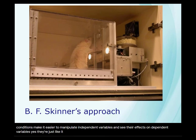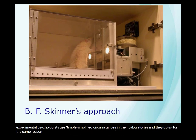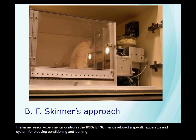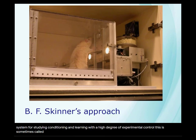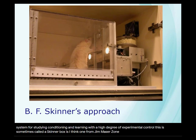Just like experimental physicists who use vacuum chambers and the like, experimental psychologists use simplified circumstances in their laboratories for the same reason: experimental control. In the 1930s, B.F. Skinner developed a specific apparatus and system for studying conditioning and learning with a high degree of experimental control. This is sometimes called a Skinner box, and the one on screen now is, I think, one from Jim Mazur's own laboratory.